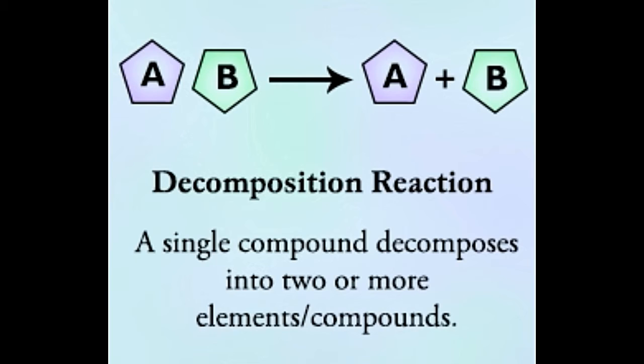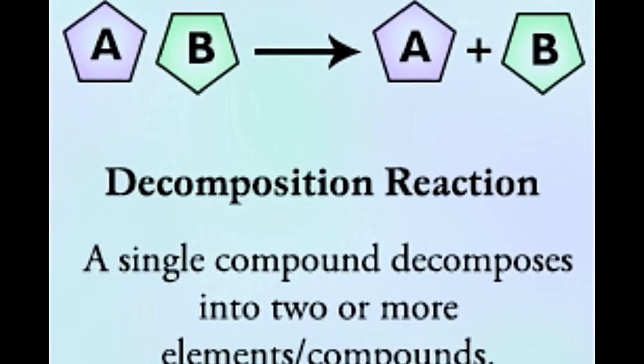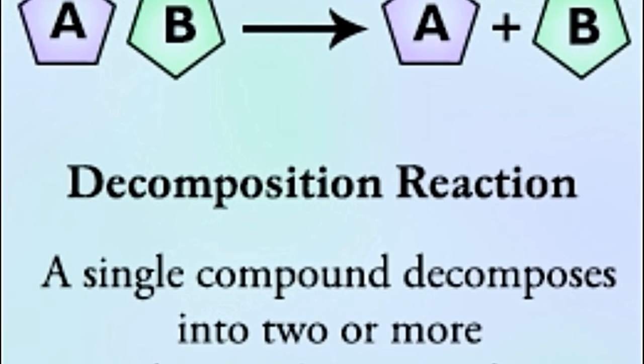Decomposition reaction definition in chemistry: Most reactions happen when the molecules of compounds are excited by some kind of energy. Only when energy is applied, the bonds between the molecules become weak and the molecules break apart into elements or compounds. Consider a simple reaction in which AB is the reactant and A and B are the products. AB breaks down only when energy is applied to it, leading to its decomposition.